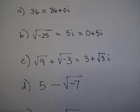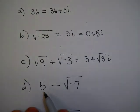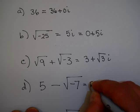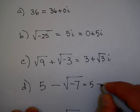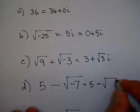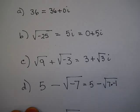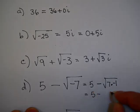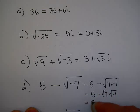Now let's see if you can do this one on your own: 5 minus the square root of negative 7. Pause the video and come back when you have completed. So 5 just remains 5, and the square root of negative 7 is the square root of 7 times the square root of negative 1, so that's 5 minus √7 i.